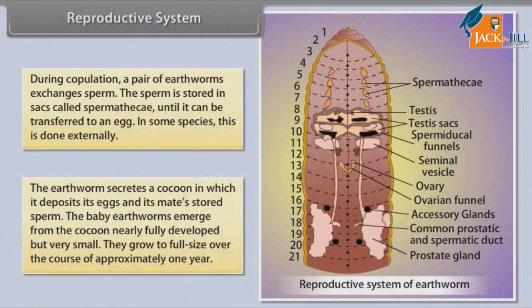The baby earthworms emerge from the cocoon nearly fully developed but very small. They grow to full size over the course of approximately one year.